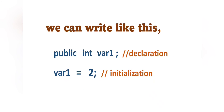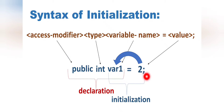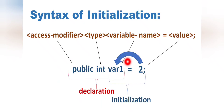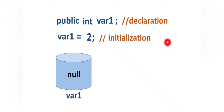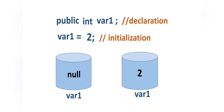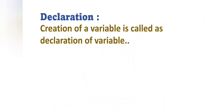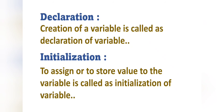We can declare and initialize a variable in a single statement, or separately. When the declaration statement executes, a null variable is created. When the initialization statement executes, the value is assigned to the variable. So creation of a variable is called declaration, and assigning a value to it is called initialization. Before using a variable in a program, we must both declare and initialize it, otherwise the compiler will raise an error.